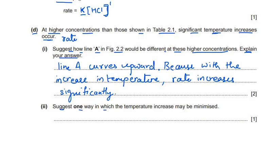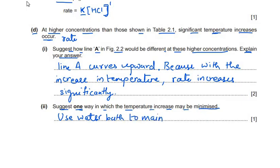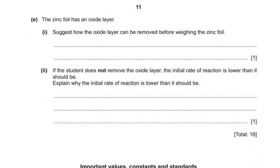Suggest one way the temperature increase may be minimized. As concentration increases, temperature increases significantly. To control and keep the temperature constant, use a water bath at a constant temperature — that is the method to maintain constant temperature.